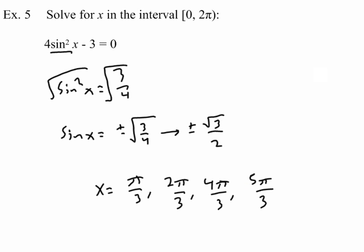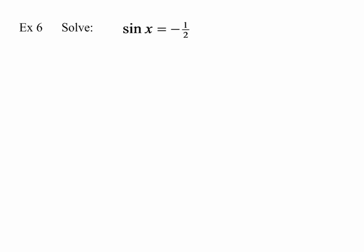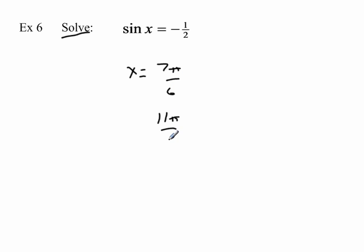Now we shift gears a bit. This next example is relatively simple, but we have to be careful: if the directions just say 'solve' without an interval, we must account for all solutions. On the unit circle, sine(x) = -1/2 at 7π/6 and 11π/6. Since it just says solve, we add +2πn to each to capture every solution — there's an infinite number.